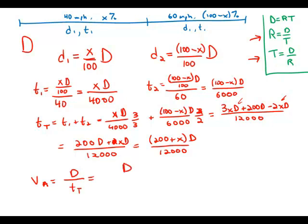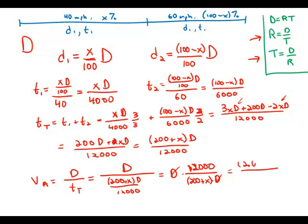And so this is capital D in the numerator. In the denominator, 200 plus X times D over 12,000. Of course, dividing by a fraction means multiplying by its reciprocal, 12,000 divided by 200 plus X times D. And of course, the Ds cancel, and we're left with this fraction, 12,000 over 200 plus X. And this fraction is equivalent to answer choice E.